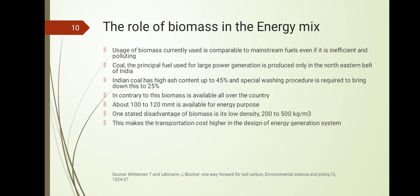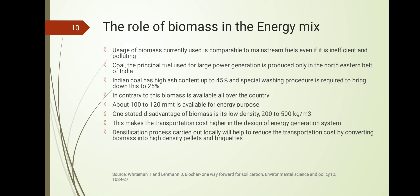The solution is to increase the density of biomass by employing decentralized industries that convert low-density biomass into high-density pellets and briquettes. For example, sawdust is a powdered biomass with very low density. By pressurizing it, you can convert it into high-density biomass. This can be done by employing decentralized units of pelletization and briquettization to convert it into high-density biomass.